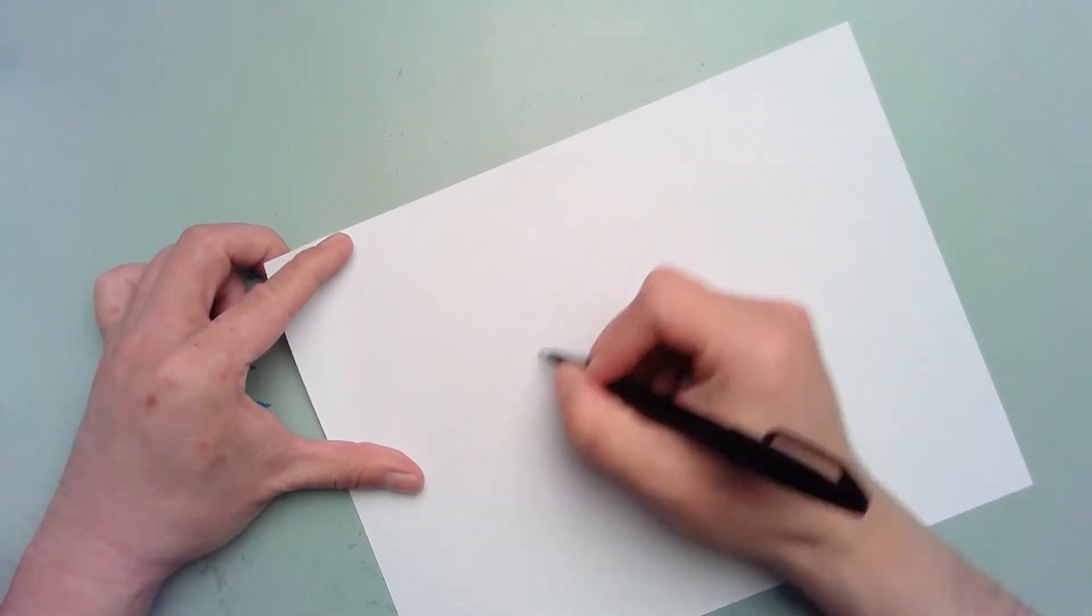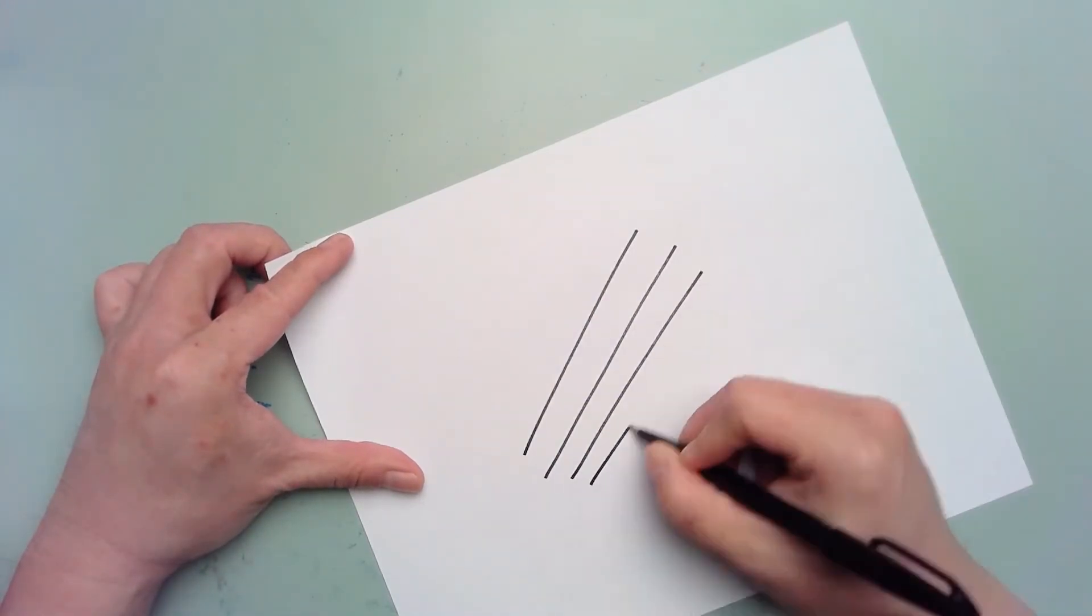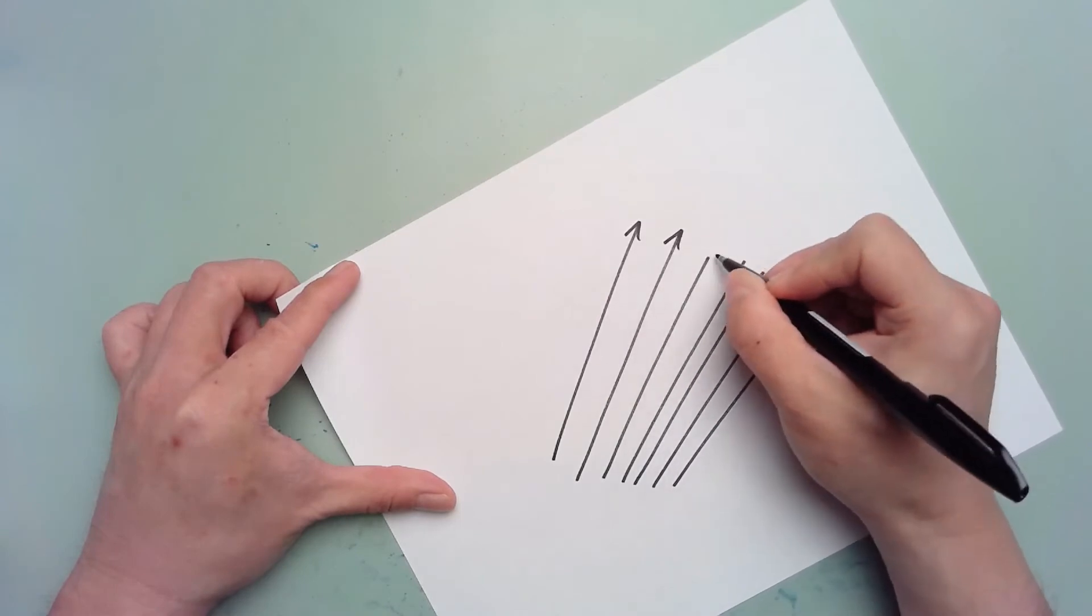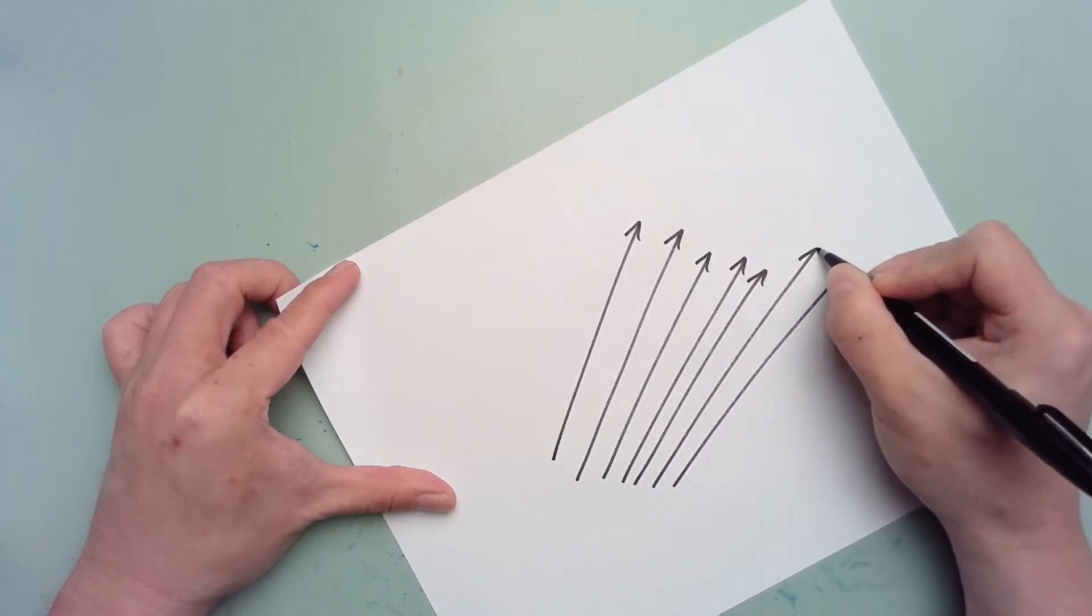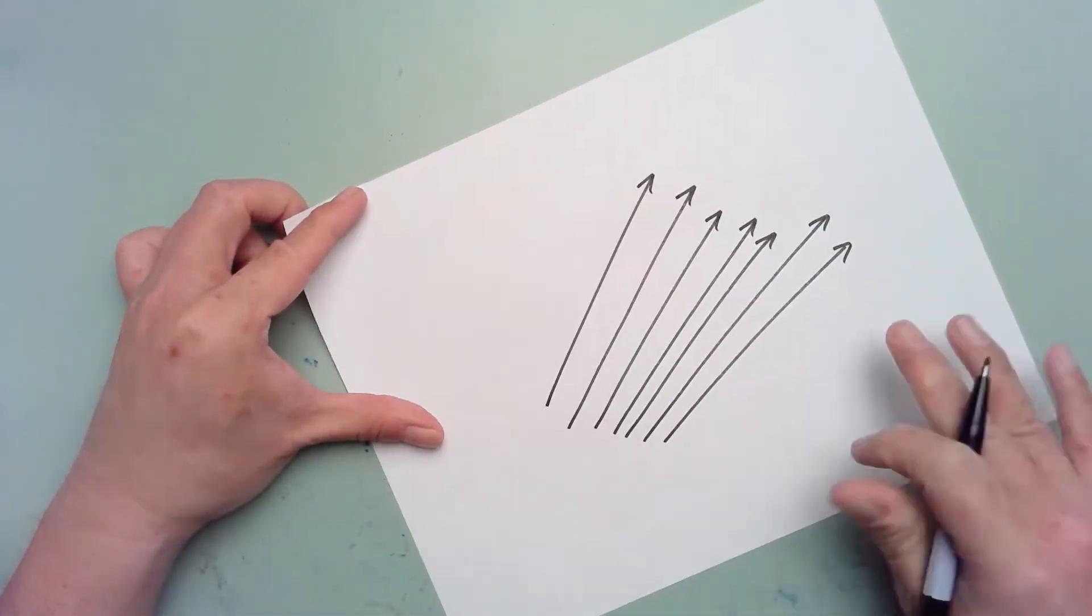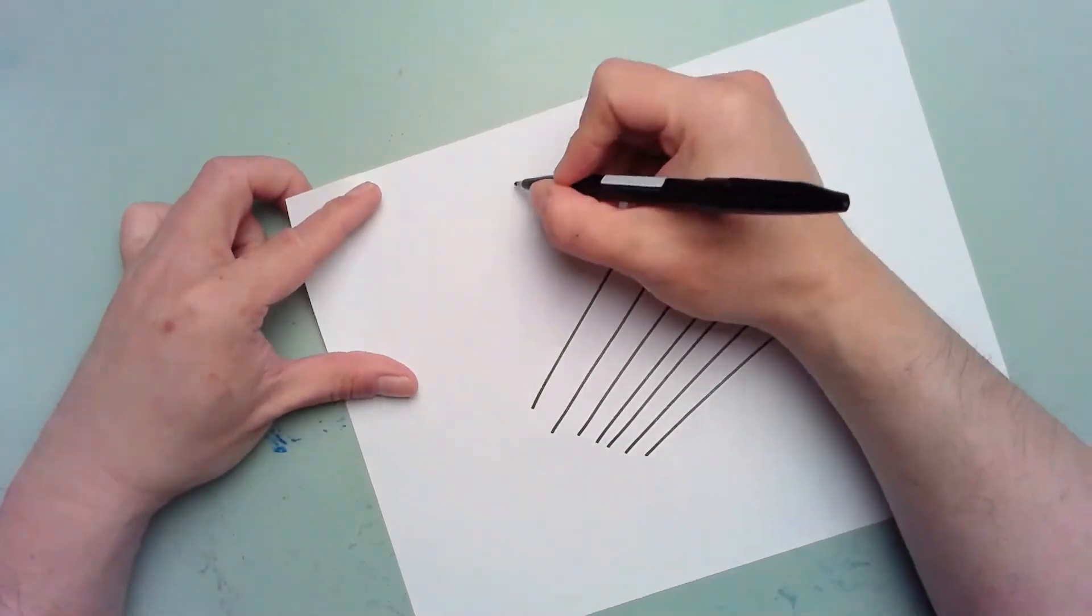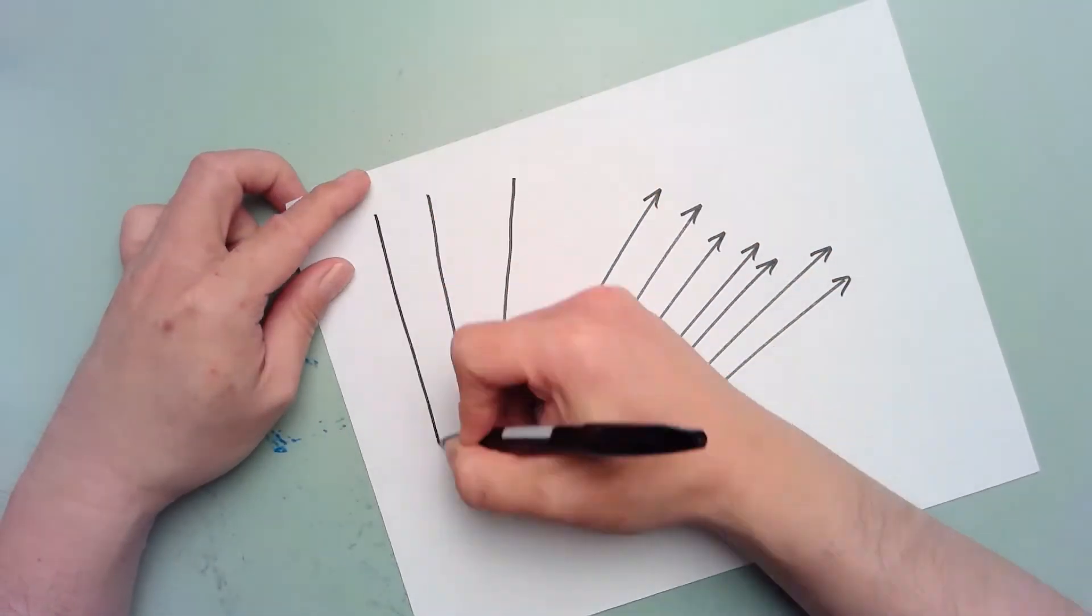Instead, you should always execute your sketching strokes away from your body. This is called the power stroke. You will notice that line work always looks weaker when it is drawn inward toward the body.